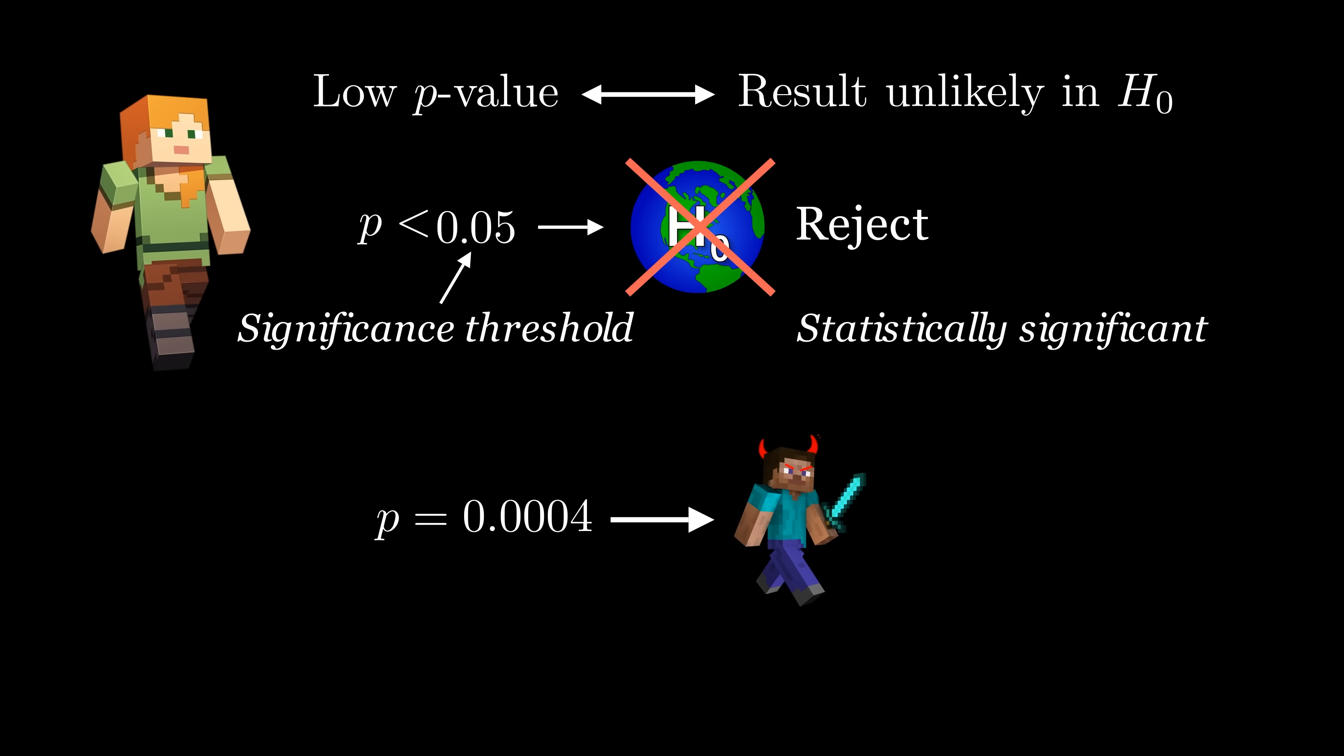It's important to remember, though, that this 1 in 2500 probability is not the probability that they didn't cheat. It's the probability of someone getting at least as lucky as our friend did if that someone was not cheating.